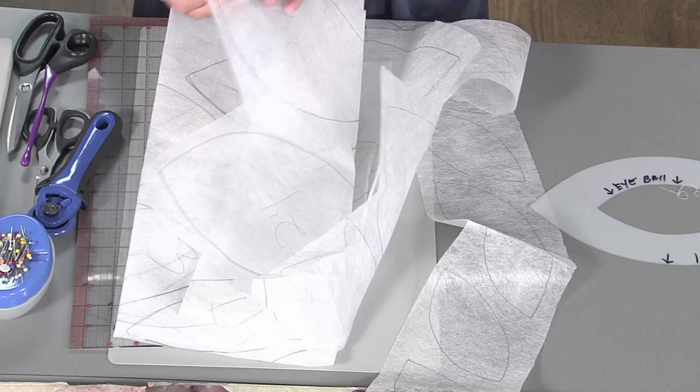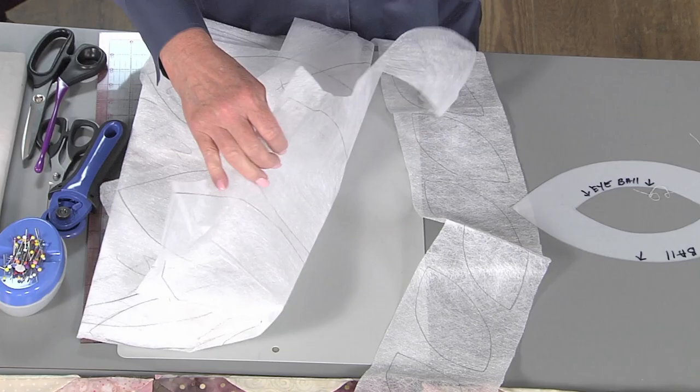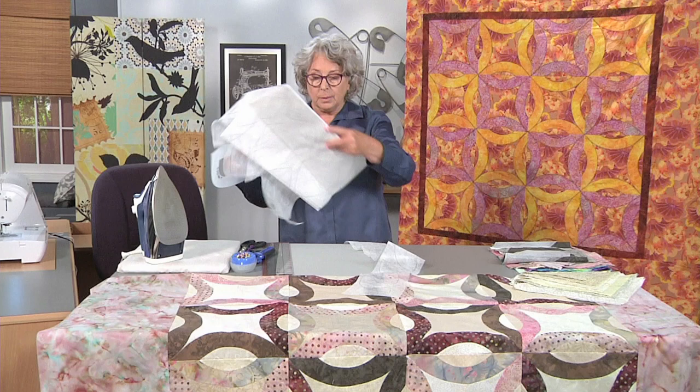Now, I'm going to use this template on this pattern tracing material. There's a lot of different varieties available. This is the one I chose. As you can see, it's very lightweight. You can see through it. You can draw on it. There's no bias. There's no right side. No wrong side. Don't worry about it.